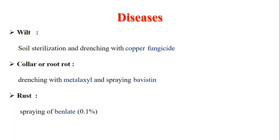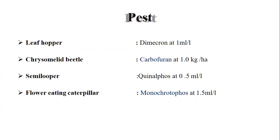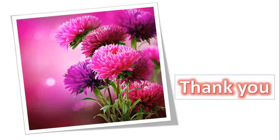There are some common diseases: Wilt, Collar Rot, and Rust. Wilt can be treated by use of copper fungicide. Collar Rot and root rot can be treated by Metalaxyl and Bavistin. Rust is controlled by spraying Bavistin. There are some pests: Leaf hopper, Chrysomelid beetle, Semi-looper, and Flower eating caterpillar. These can be controlled by Dimecron, Carbofuran, Quinolphos, and Monocrotophos. This was all about China Aster flowers.